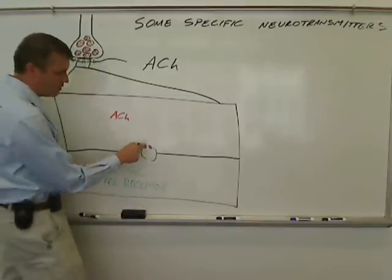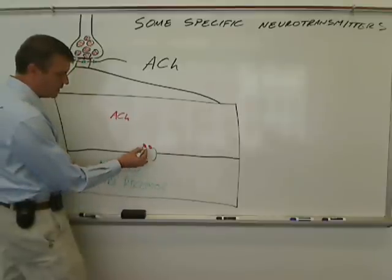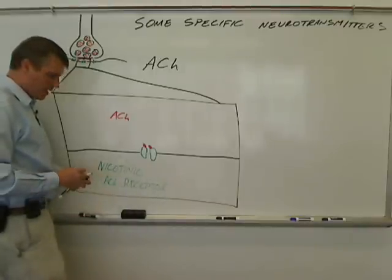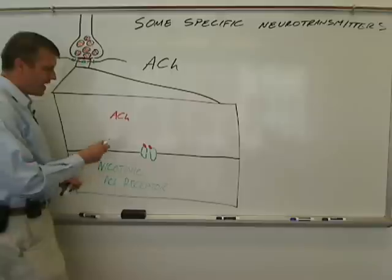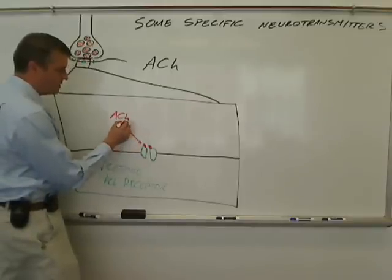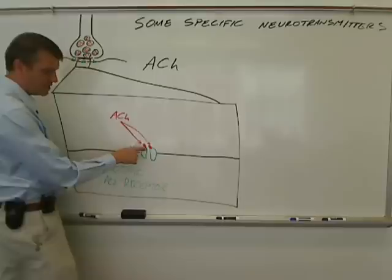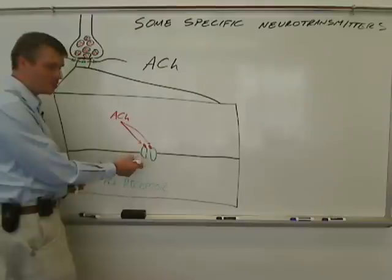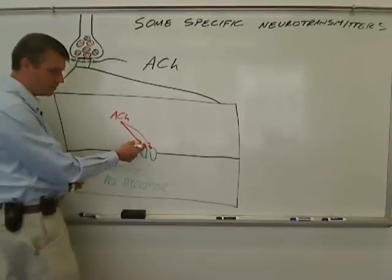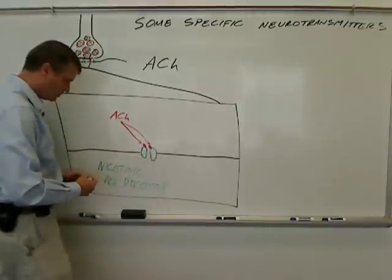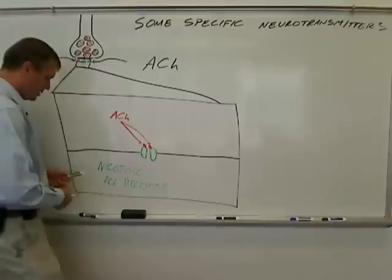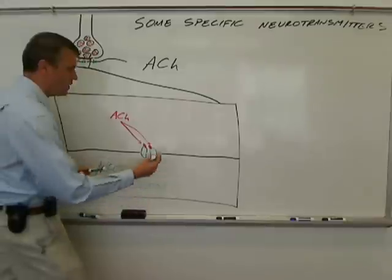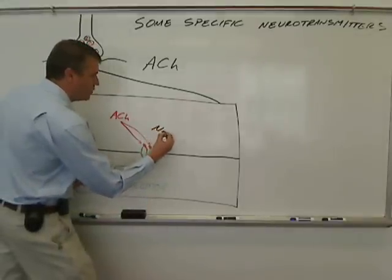At any rate, when acetylcholine binds to the nicotinic receptor, that nicotinic receptor is what we call a ligand-gated ion channel. Ligand means a molecule that can bind to this receptor, and in this case, acetylcholine is the ligand. The receptor is a ligand-gated ion channel, so when it binds its ligand, the acetylcholine, the channel opens. An open nicotinic acetylcholine receptor allows sodium and potassium to flow freely through the channel.